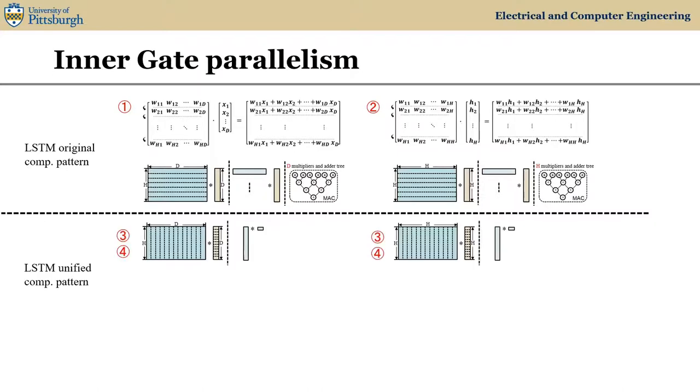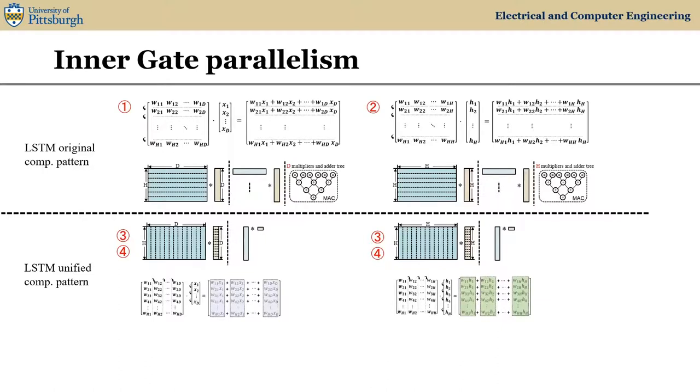First, each element of the vector multiplies its corresponding weight column. Second, we iterate all the vector elements and its corresponding weight columns. Third, we accumulate the products of vector element and weight elements in the same row. Therefore, the two MACs can be processed via patterns three and four as well.